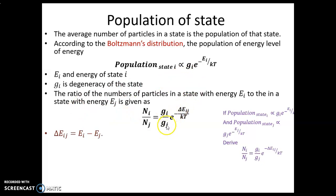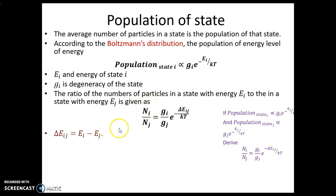If you have two states, we can compare the ratio of their populations. Considering population in state j and population in state i and deriving a relationship between the two, the ratio of population in state i to that of state j is simply the ratio of their degeneracies multiplied by the exponential of the separation of their energies over kT.